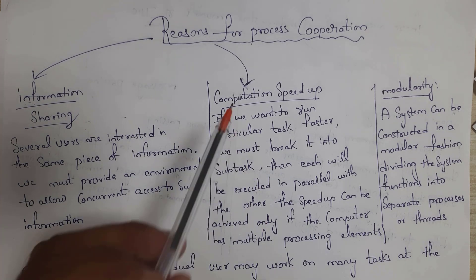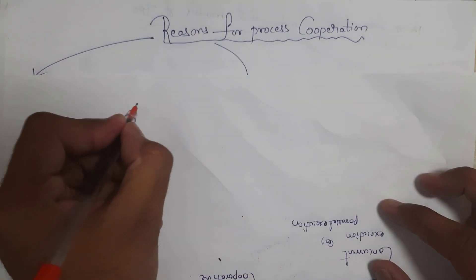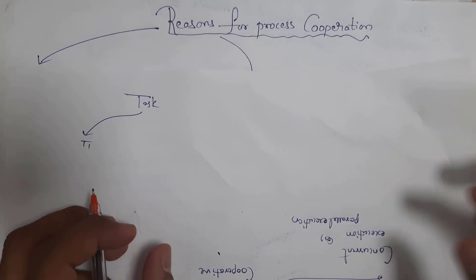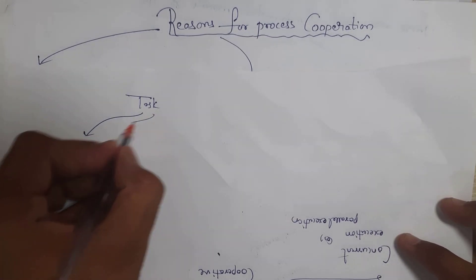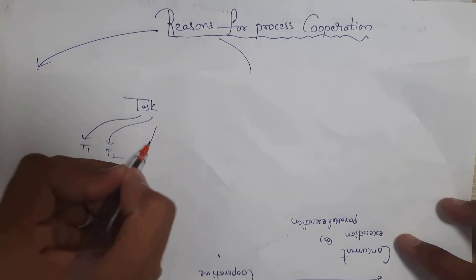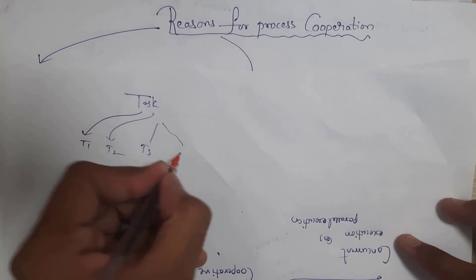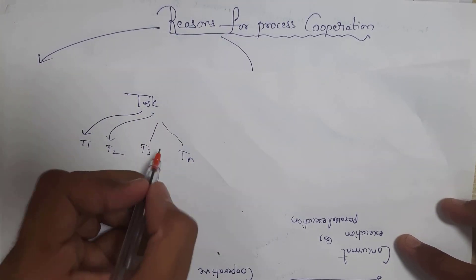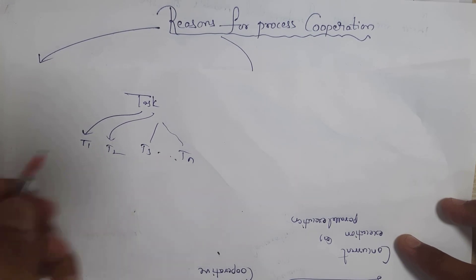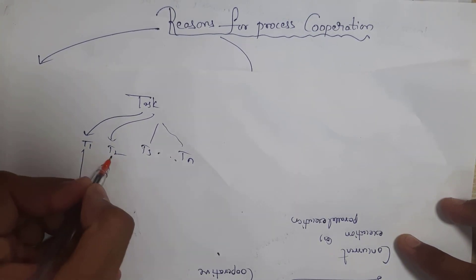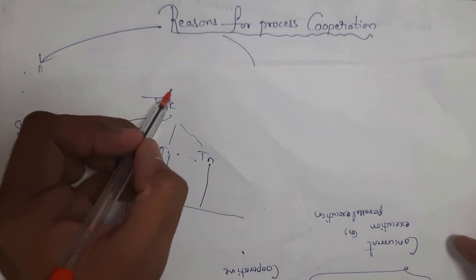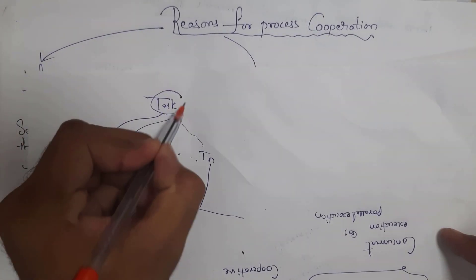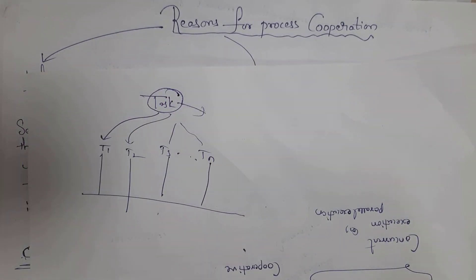The next reason is computation speedup. For example, if there is one big task, we divide it into smaller subtasks like task 1, task 2, task 3, and so on up to task N. By dividing the big task into smaller subtasks and executing all these tasks in parallel, the task will complete faster. In order to achieve this, we need process cooperation.